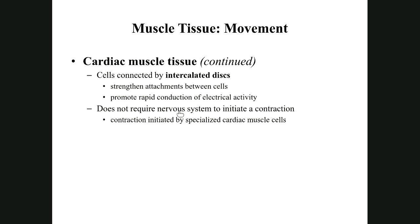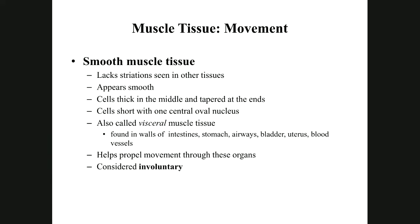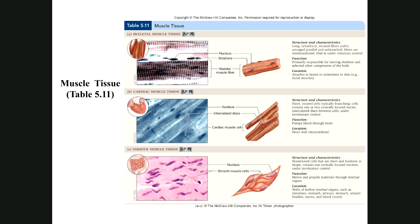Cardiac muscle doesn't require nervous stimulation to beat — it is auto-rhythmic. However, the nervous system can adjust heart rate: excitement speeds it up, relaxation slows it down. Smooth muscle is the last type — it lacks striations entirely, appearing smooth. These cells are fat in the middle and tapered at the ends, and they are involuntary. They are found in the walls of tubes throughout the body.